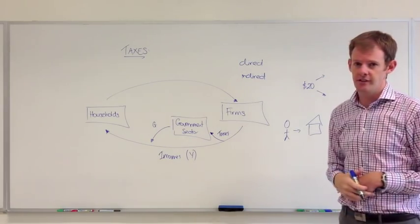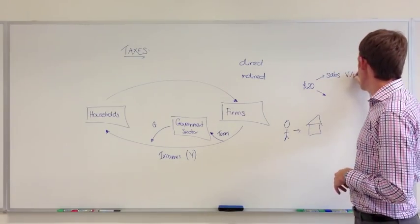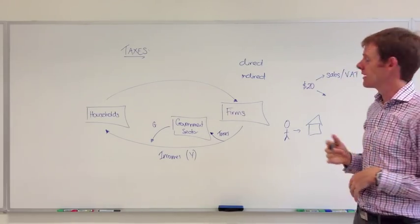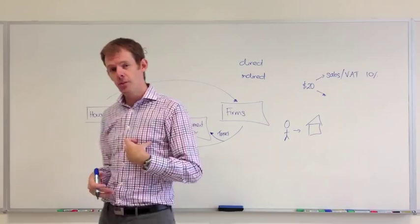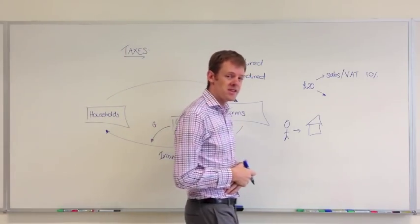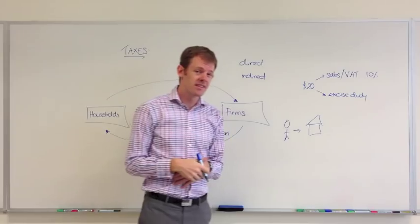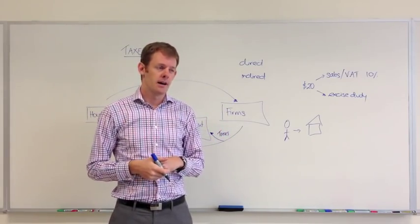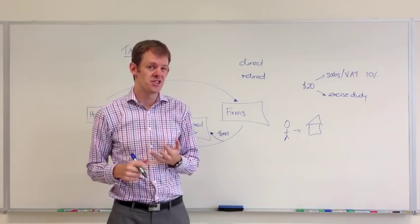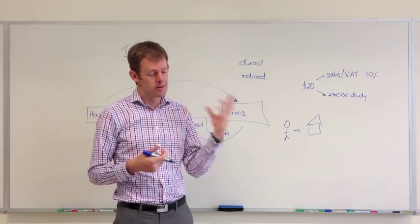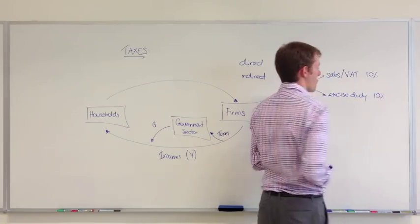There's two types of indirect taxes. Firstly, there might be something called a sales tax, or a value-added tax. In some countries, that's a percentage of the price of the product, say 10%. That's paid by the firm on your behalf to the government. Or, there might be another type of indirect tax, such as an excise duty. Sometimes these are used by governments to discourage the consumption of types of products as a way to correct market failures. For instance, petrol taxes, cigarette taxes and alcohol taxes are all considered to be part of excise duties. That might be another 10% tax.